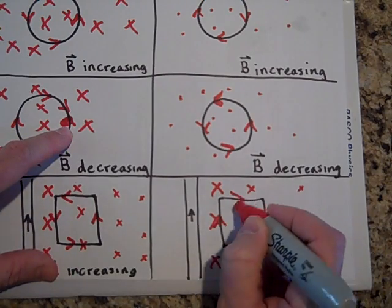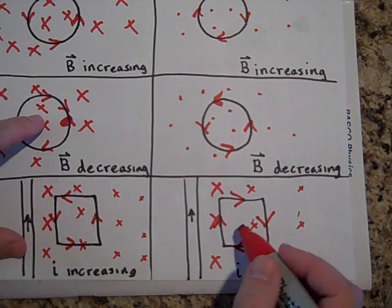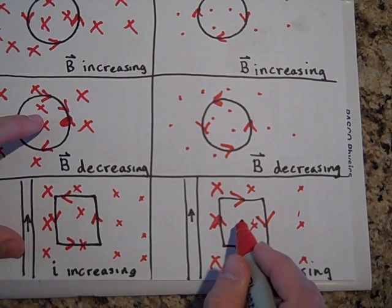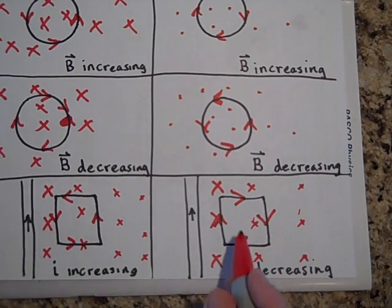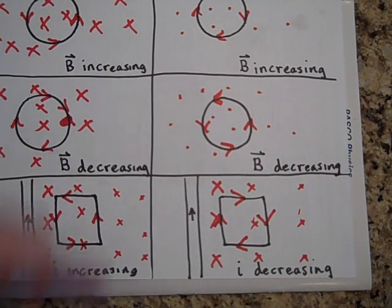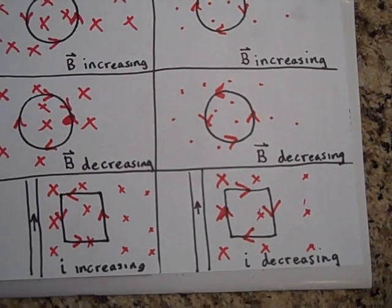You see how Lenz's law works — it's always trying to keep the status quo. If the x's are increasing, it will try to make dots. If the x's are decreasing, it will try to make x's. Thanks, bye.